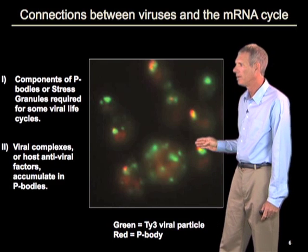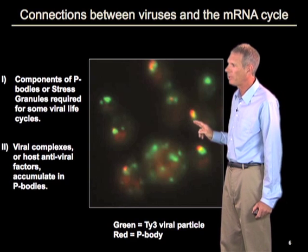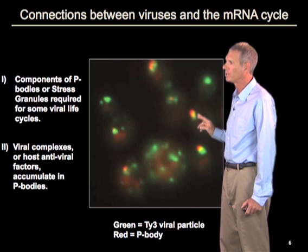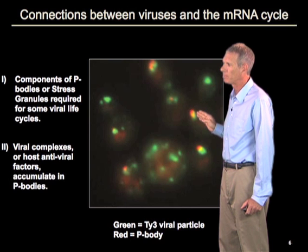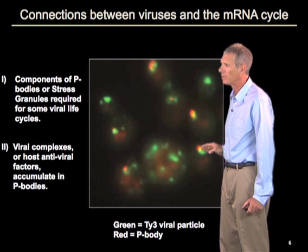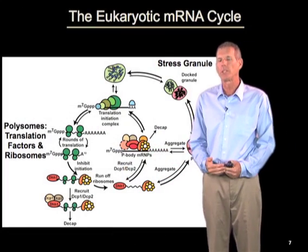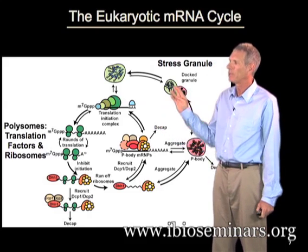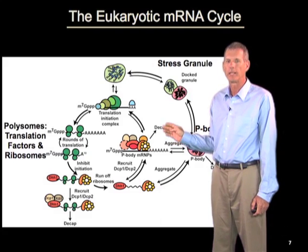What we're looking at here — these are yeast cells — the green are markers of p-bodies, and the red shows newly assembled viral particles for the retrotransposon Ty3. While they don't overlap completely, these viral particles tend to be found in conjunction with, and with partial overlap with, p-bodies. My lab has been interested in trying to understand what the properties and functions of p-bodies are, and how it relates to these dynamic transitions that RNAs can undergo in regulating their translation and degradation.